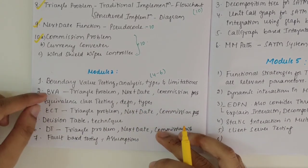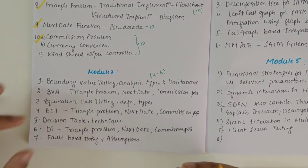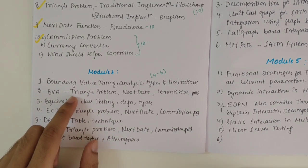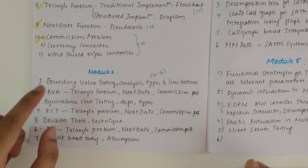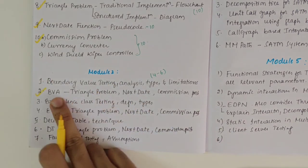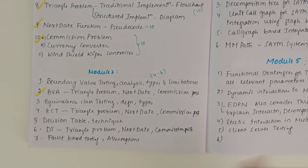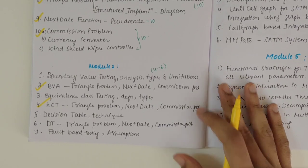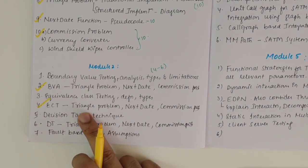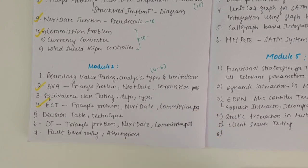If you go through BVA, ECT, and DT techniques, you will understand the theory easily, so you need not emphasize on theory too much. If you know how boundary value testing works, you can easily explain its limitations, advantages, and types. BVA for triangle problem, next date, and commission are must. Then we have equivalence class testing — its definition and types. If you know those, you can derive test cases for the triangle problem, next date, and commission problem.